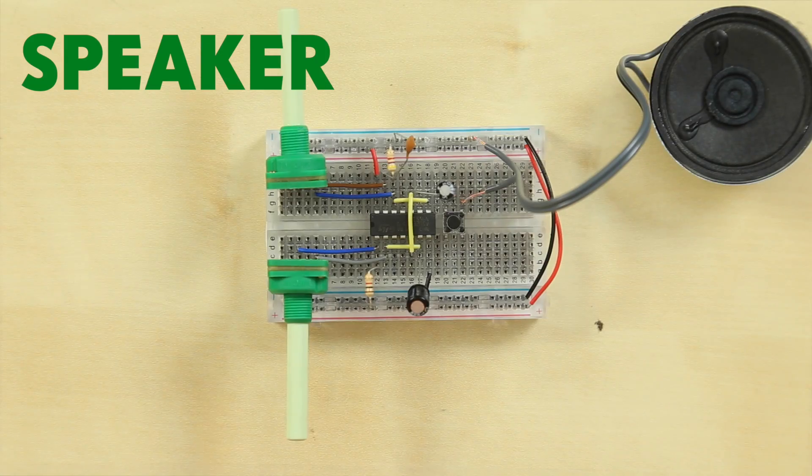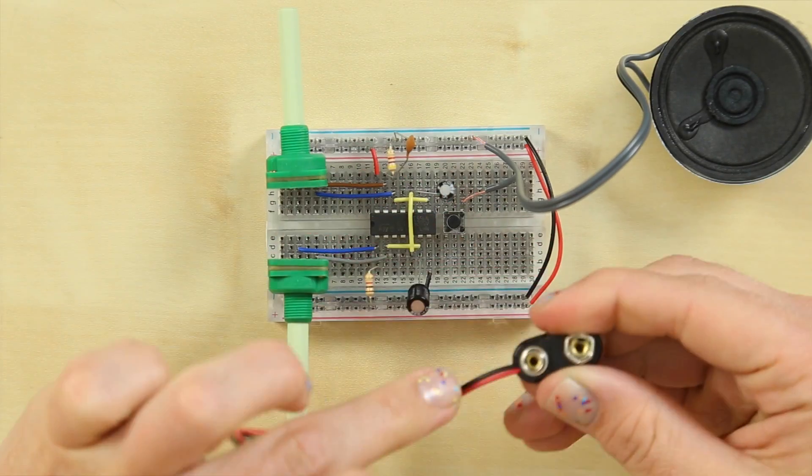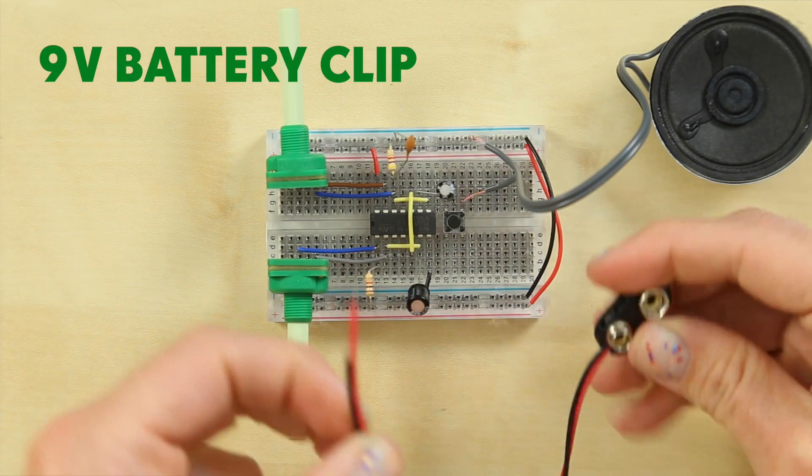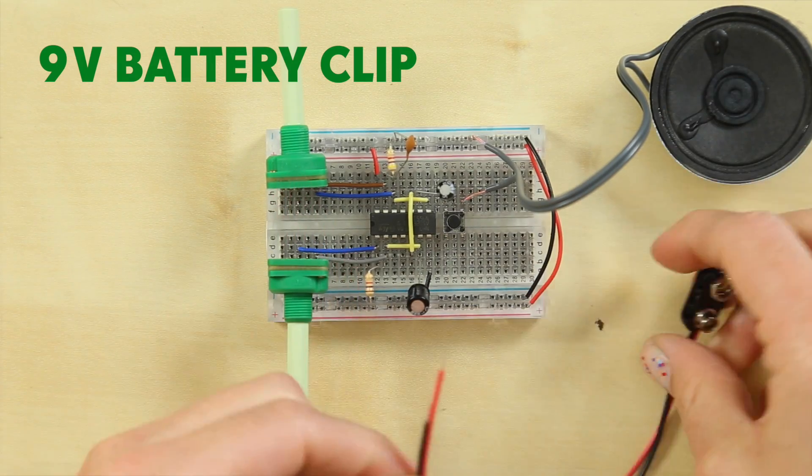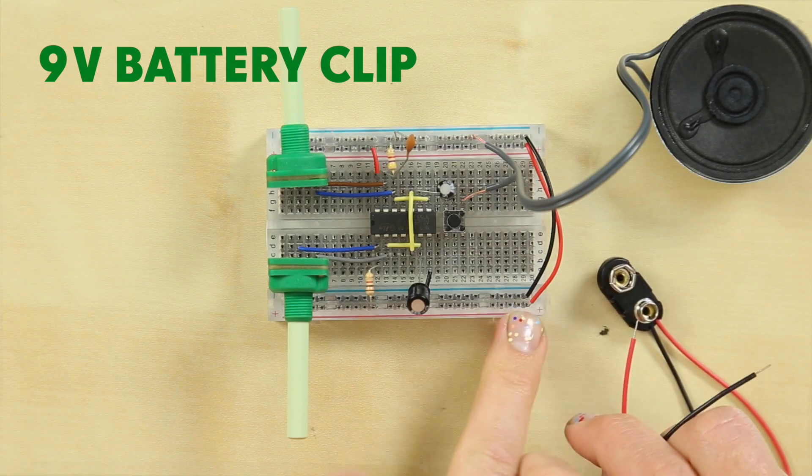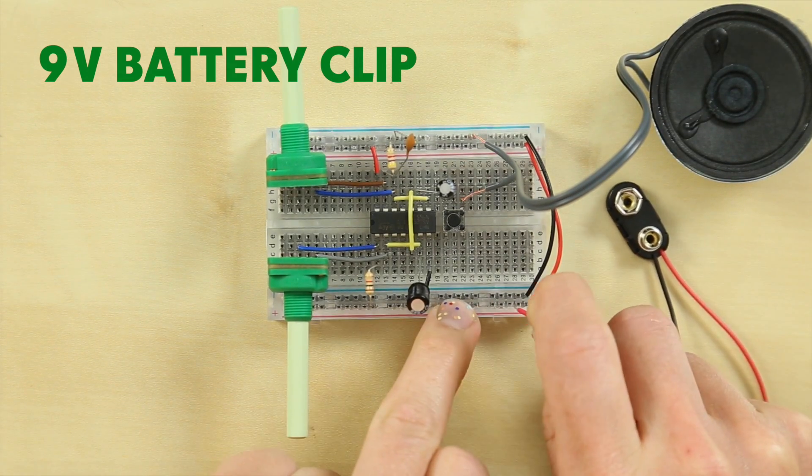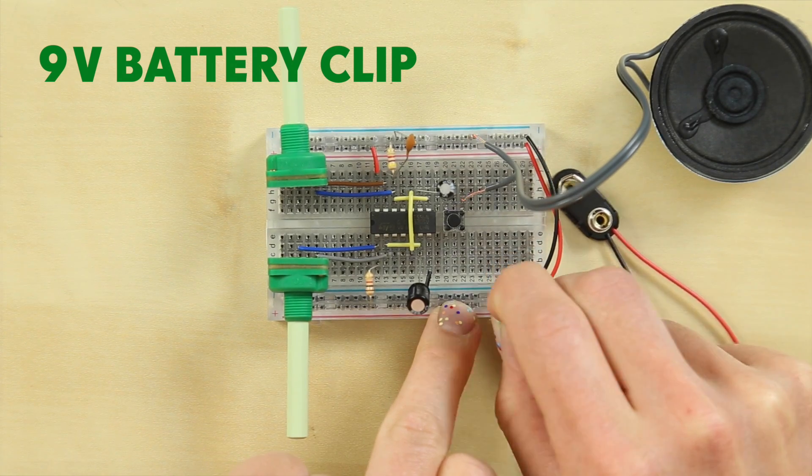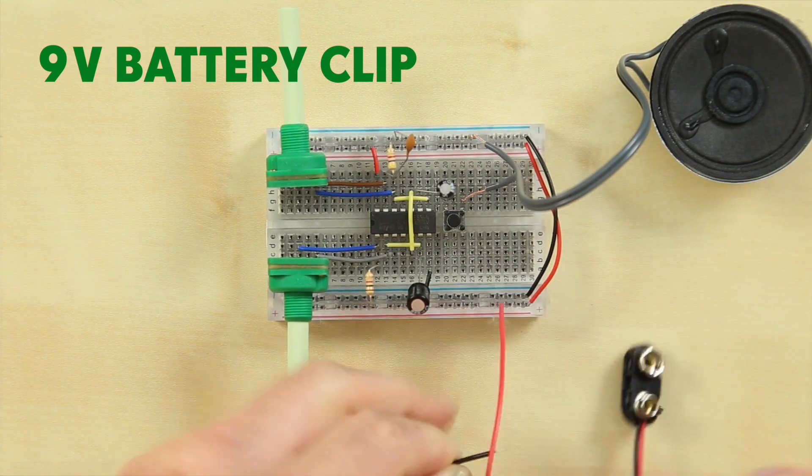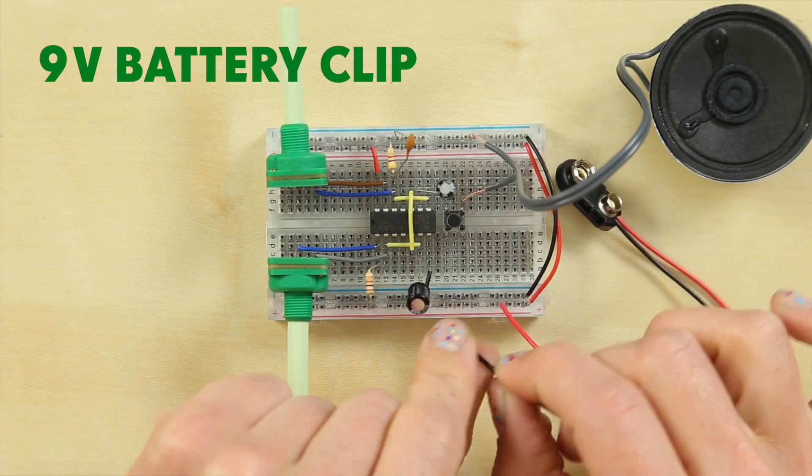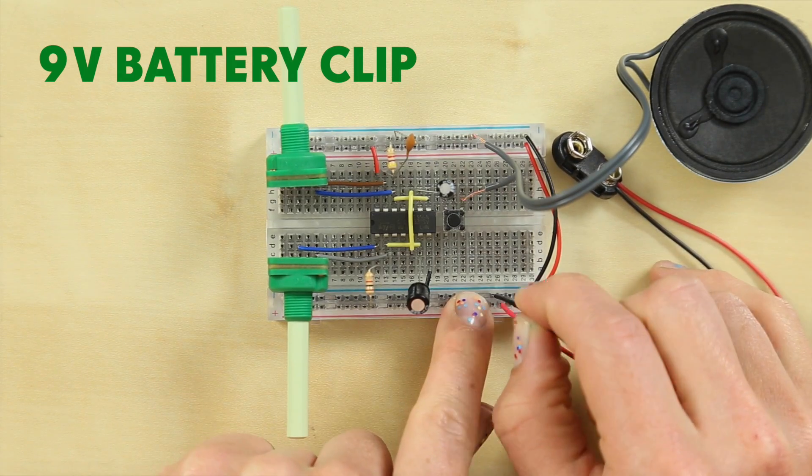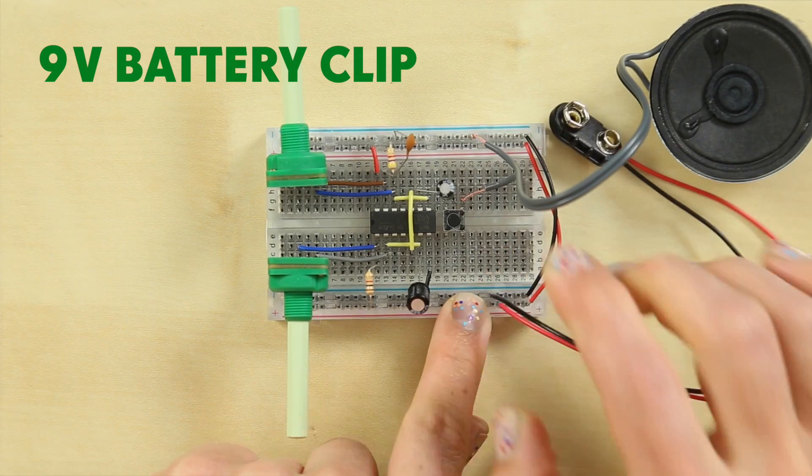The next thing you'll need to attach is your battery clip. This is a 9V battery clip and it will take the power into your circuit. So you want to be in this little top right-hand box of your breadboard. Pop the red wire into the same rail as your red jumper wire and then the black wire into the same rail as your black jumper wire.